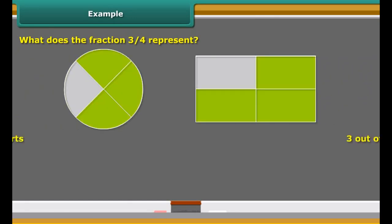What does the fraction 3 upon 4 represent? It represents 3 out of 4 parts. The shaded part of each figure below represents 3 upon 4 of the entire figure.